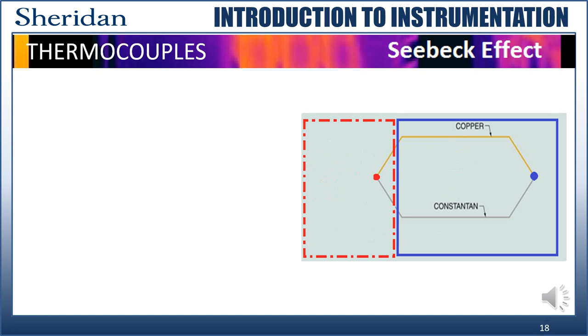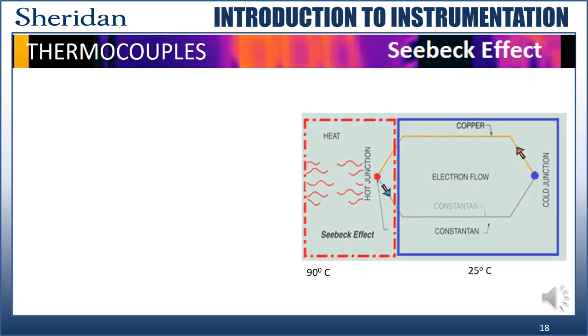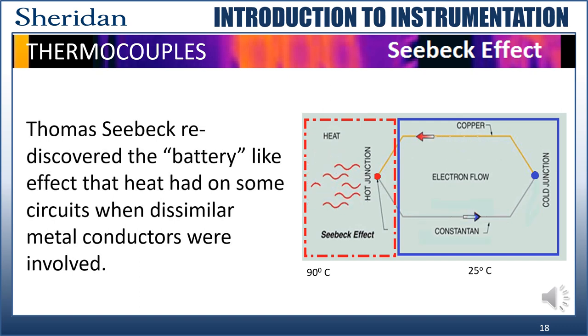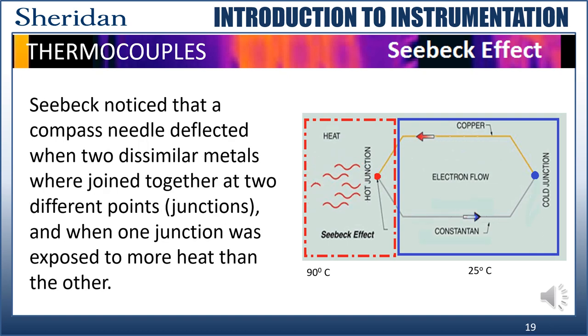Let's apply some heat to the target material to be measured, say 90 degrees Celsius. The reference junction will remain at the ambient temperature of 25 degrees Celsius. As can be seen, a current caused by the Seebeck voltage begins to flow in the circuit. The Seebeck effect and voltage are named after Thomas Seebeck, who rediscovered the battery-like effect that heat had on some circuits with dissimilar metal conductors. Seebeck noticed that a compass needle deflected when two dissimilar metals were joined together at two different points, or junctions, and when one junction was exposed to more heat than the other.